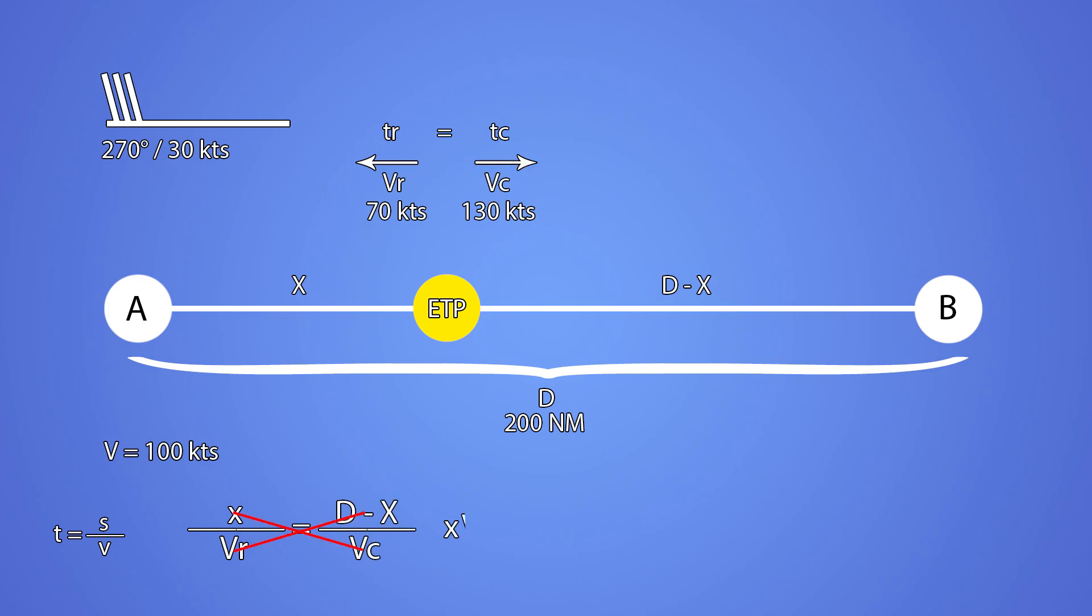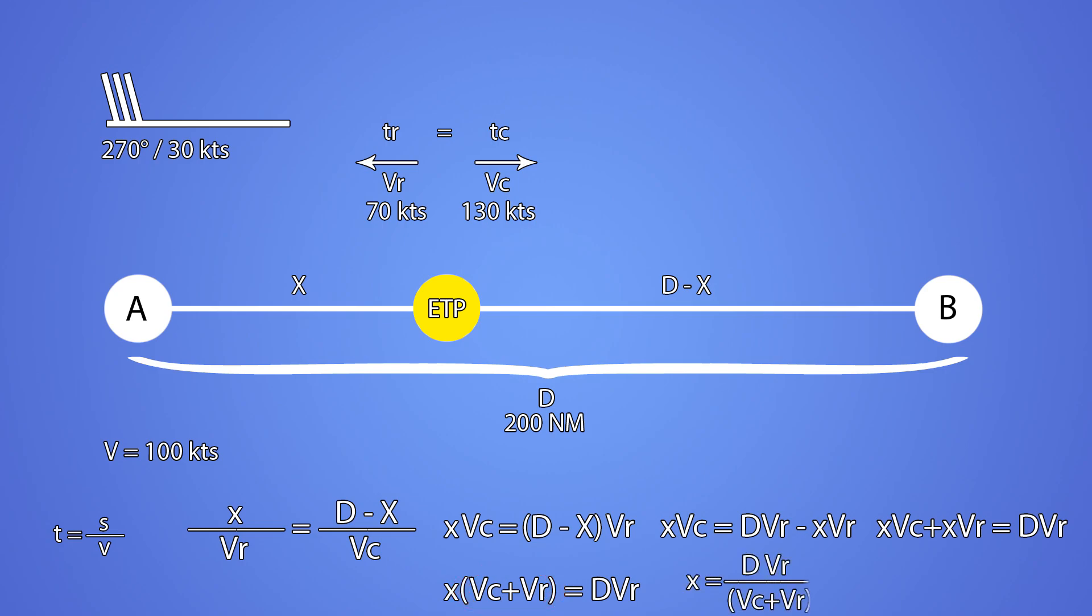We can cross multiply and get this. On the right side, we multiply both d and x with Vr. Now we can transfer everything that contains x to the left side and everything else to the right. Isolate an x on the left gives us this. We can now divide everything by Vc plus Vr and get the value of x which is our ETP distance from the departure airport.